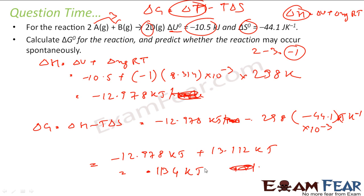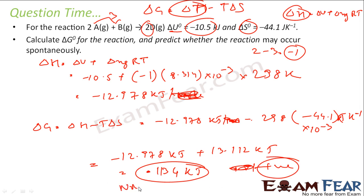What I am concerned about is that delta G is positive. Since delta G is positive, my reaction is non-spontaneous. The key result is 0.134 kilojoules.